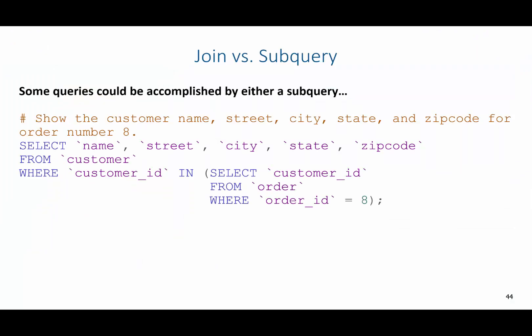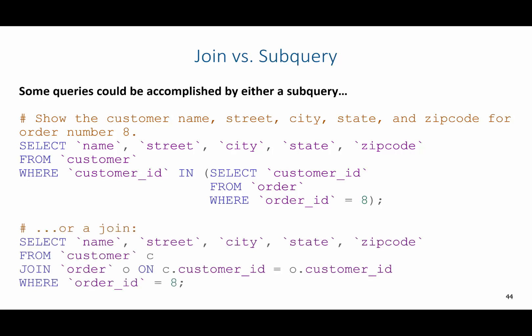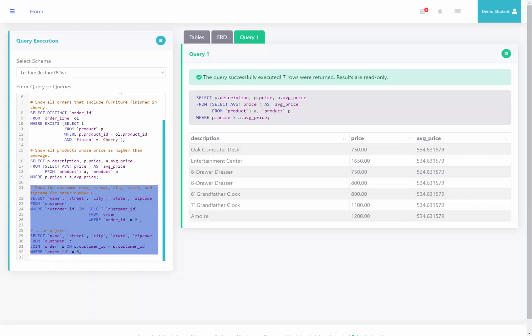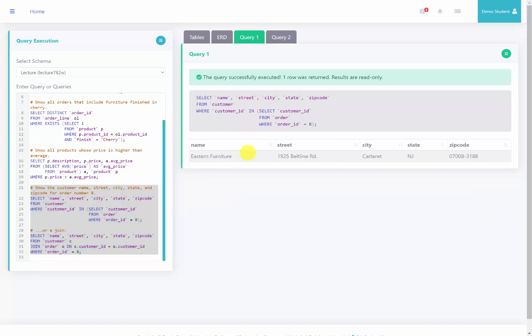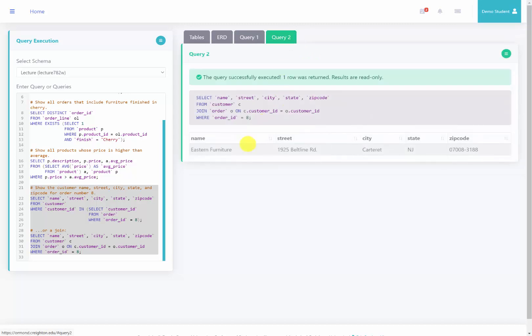As mentioned previously, some queries done with subqueries could also be accomplished with joins. For example, to show the customer name, street, city, state, and zip code for order number 8, I can use a subquery: select name, street, city, state, zip code from customer where the customer ID is in a list of customer IDs from the order table where order ID equals 8. Or I can accomplish this with a join: select name, street, city, state, zip code from customer C join order O on C.customer ID equals O.customer ID where order ID equals 8. Running both queries shows they return the exact same result — Eastern Furniture with its associated information.